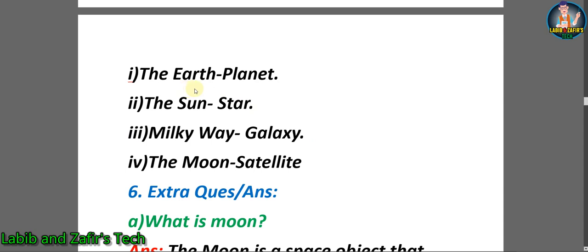Number one: The Earth - Planet. Number two: The Sun - Star. Number three: The Milky Way - Galaxy. Number four: The Moon - Satellite.